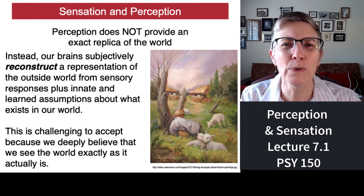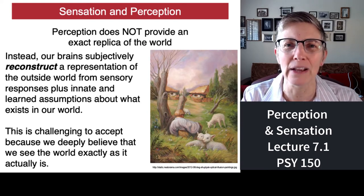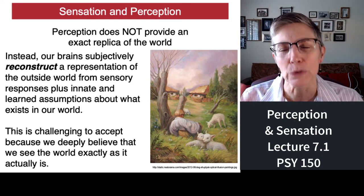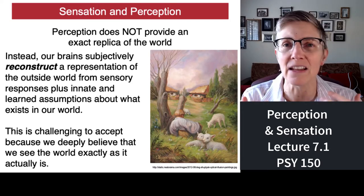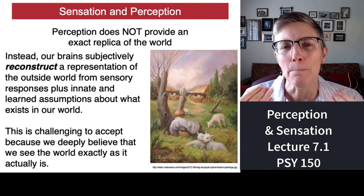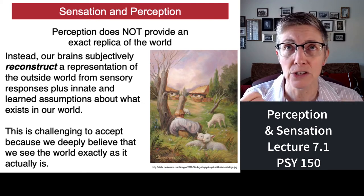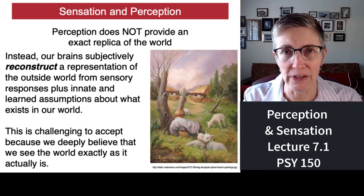You might wonder why we even need a stage of perception. Don't we just record whatever is out there in the world? Well, here's the problem — and it's sort of hard for us to wrap our brains around because we live with the illusion that we perceive the world as it actually is. But that isn't what happens. Sensory information, for reasons you'll find out later, is incomplete and ambiguous. So you have to use your brain to interpret that information. What your brain does is it reconstructs or builds a model of the outside world, and that model has to deal with ambiguities.